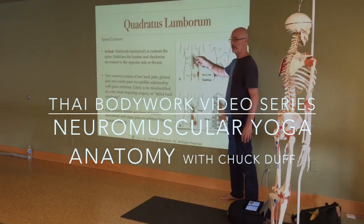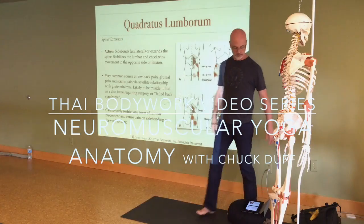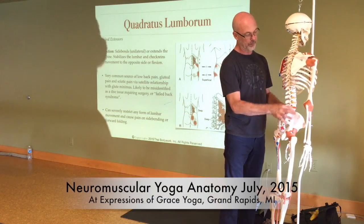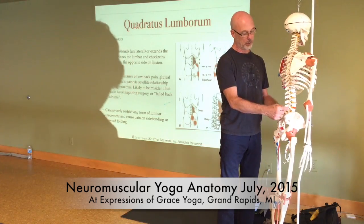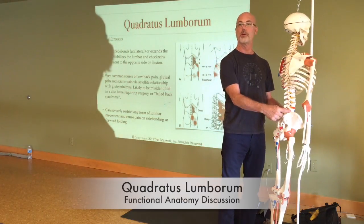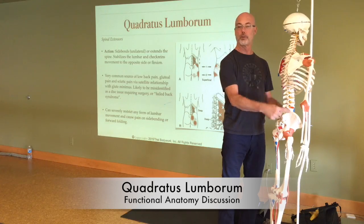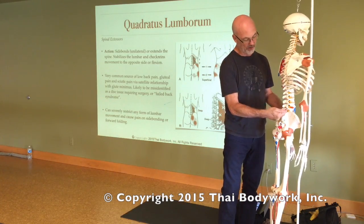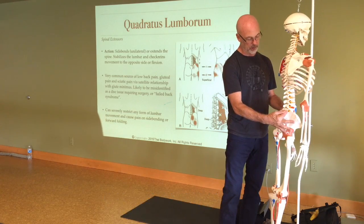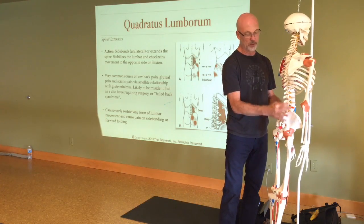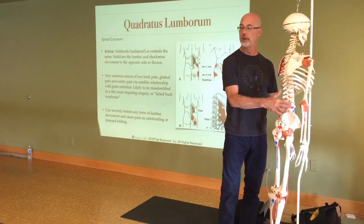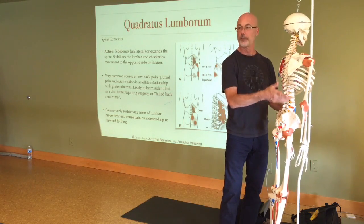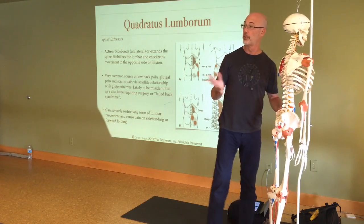This muscle is the webbing between the iliac crest and the ribs. There are some fibers that go long — literally webbing. There are some fibers that cut across from the iliac crest at a diagonal to the transverse process. And there are other fibers that go from the rib to the transverse process. So three different fiber parts.